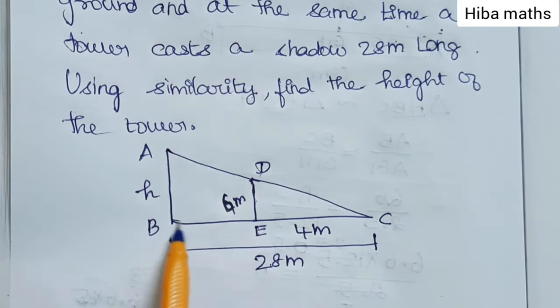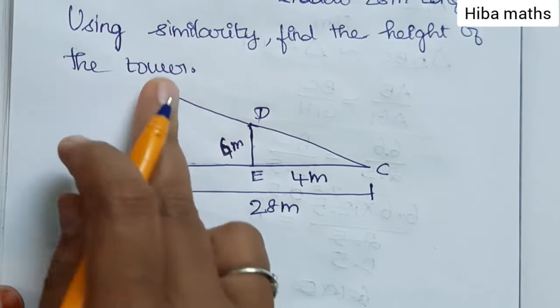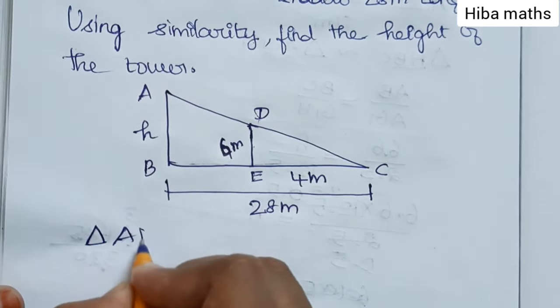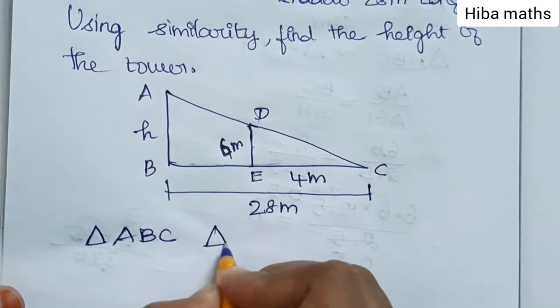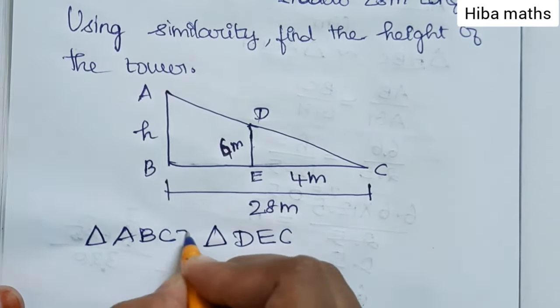Using similarity, let's take two triangles: triangle ABC and triangle DEC. Triangle ABC is similar to triangle DEC.